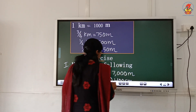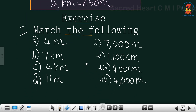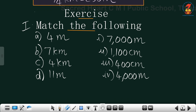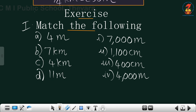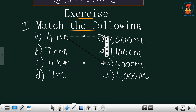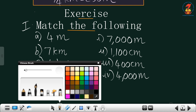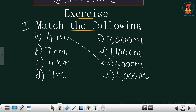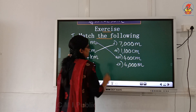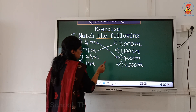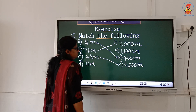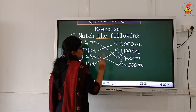And the next one is match the following. I will give you some exercise problems. Match the following: 4 meter — you need to match to the correct answer in the next column. 4 meter equals 400 centimeter, so you need to join those. And 7 kilometer equals 7000 meter. And 4 kilometer is 4000 meter only. And 11 meter equals 1100 centimeter only.